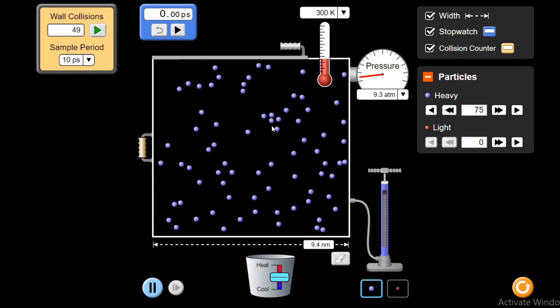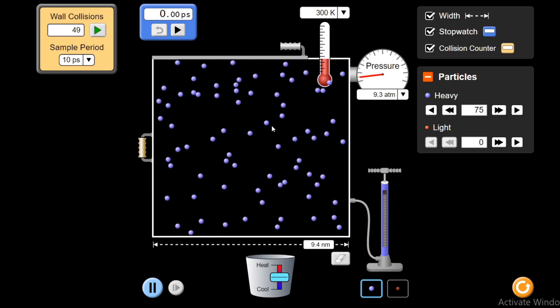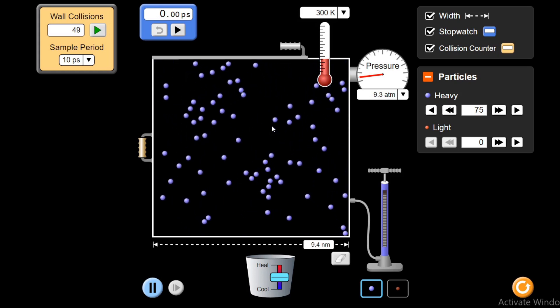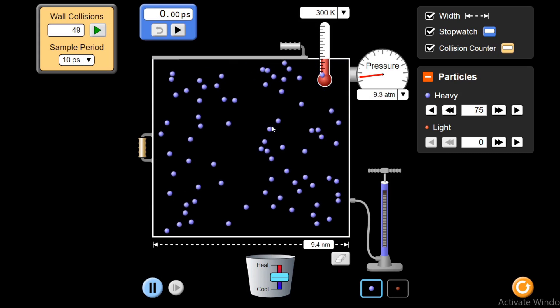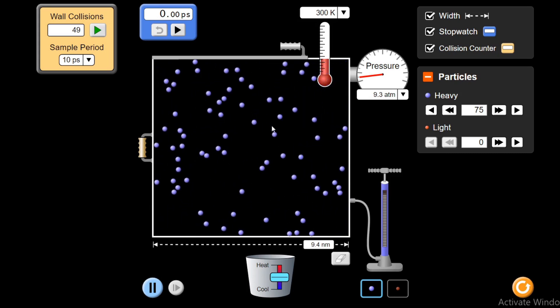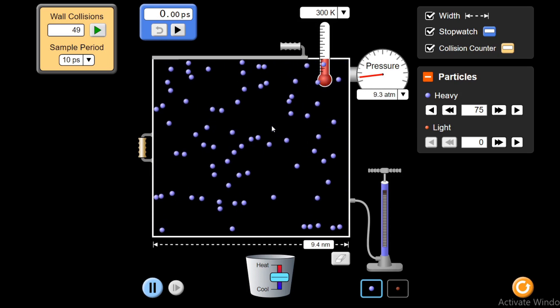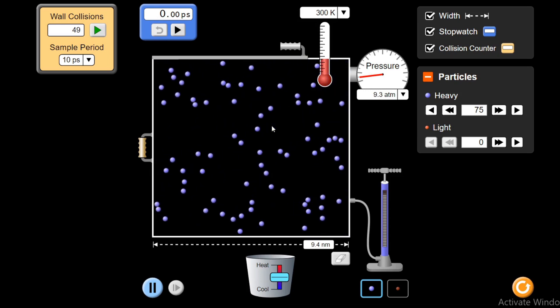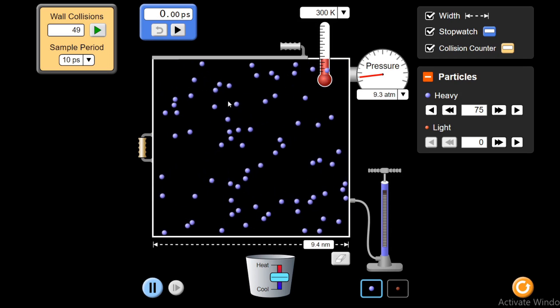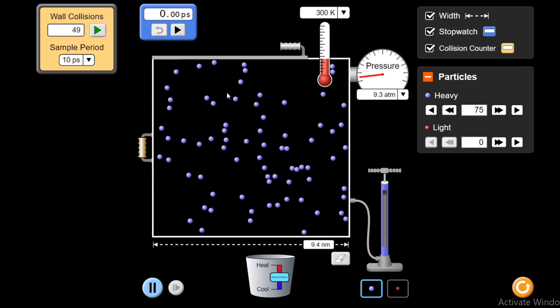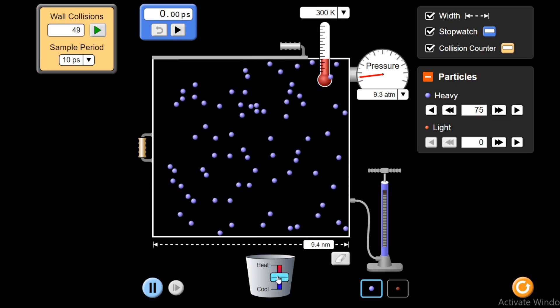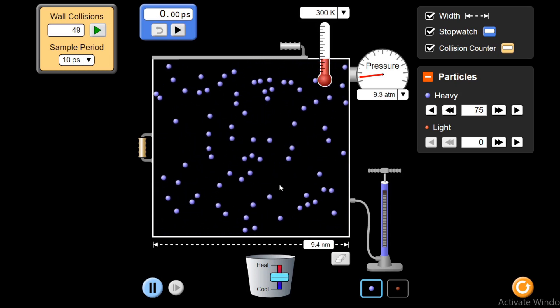If I further increase the number of molecules, then what will happen? They will exert more pressure per unit area on the walls of the container and I will see increase in pressure. Another method to increase the force is by increasing the velocity of these molecules, the kinetic energy of these molecules so that they will collide with the walls with more energy. I can increase the temperature by heating this container.